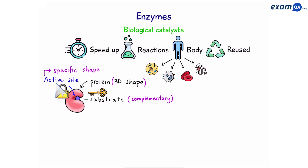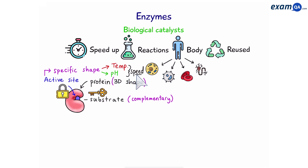Now this shape of the active site can be affected by changes in temperature or pH, and if these two change, that means the speed of the enzyme can also be affected. So let's see how temperature and pH affect the speed of an enzyme.